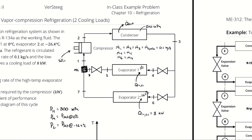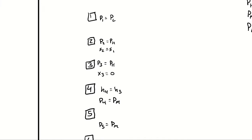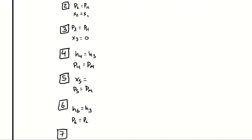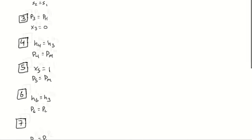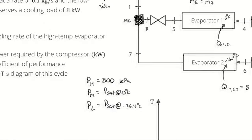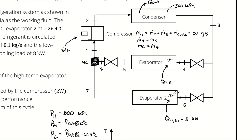We assume the condenser condenses the substance and nothing more, and the evaporators evaporate and nothing more — no superheating nor supercooling. That means the quality at the outlet of the condenser, state 3, is zero. The quality at the outlet of evaporator 1, state 5, is one. The quality at the outlet of evaporator 2, state 7, is also one. That leaves state point 1: if we knew everything about state points 8 and 7, we could use an energy balance in the mixing chamber to find the enthalpy at state 1. Let's leave state 1 aside for now.